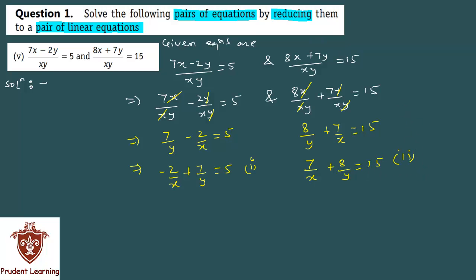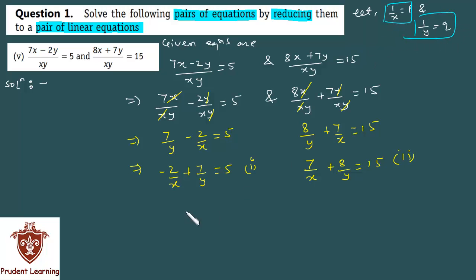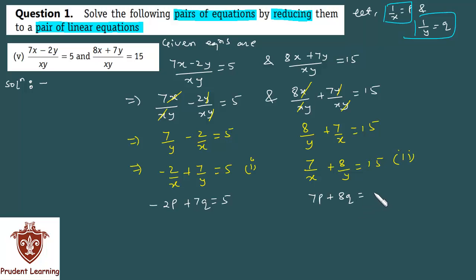This is your second equation. Now, if you look at both equations, 1 by x and 1 by y are common. So we convert using p and q substitution. We put p for 1 by x, giving minus 2p plus 7q is equal to 5 as the third equation, and 7p plus 8q is equal to 15 as the fourth equation.